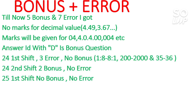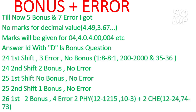For the 25th first shift, there is no bonus and no error as per the answer key, but if you find something you can comment it down. For the 25th second shift, there is 1 bonus and no error. For the 26th first shift, there are 2 bonus and 4 errors — this is the maximum bonus and error in any shift. If you belong to this shift, look carefully at the answer key to estimate your marks.